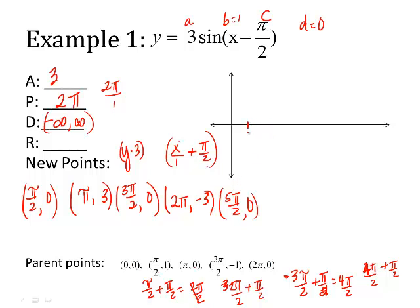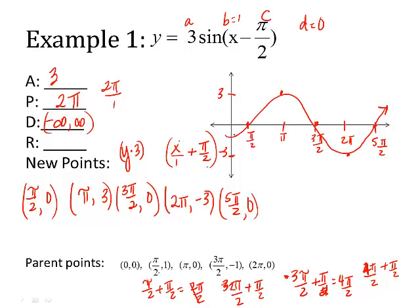Plotting the new points: at π/2 I'm at 0, at π I'm at 3, at 3π/2 I'm at 0, at 2π I'm at negative 3, and at 5π/2 I'm back at 0. Notice the curve has shifted to the right. Put arrows on the ends because it goes on forever in both directions. Domain is negative infinity to positive infinity. Range: lowest y value is negative 3 and highest is positive 3, so range is [−3, 3].